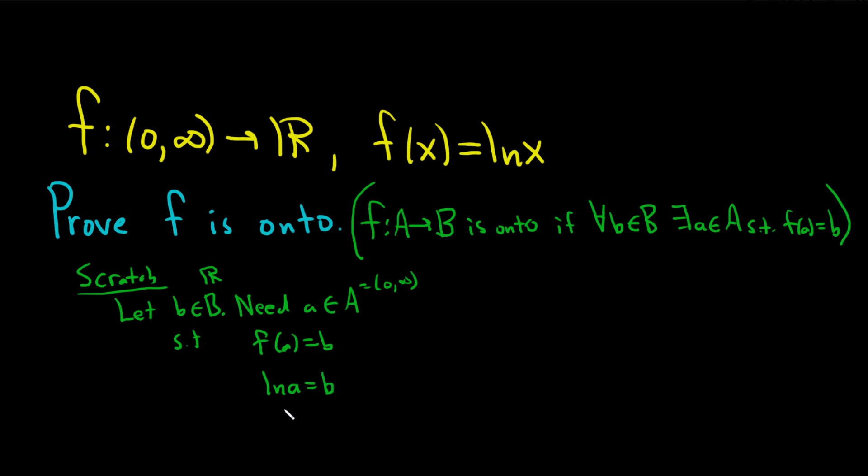Well how do we find the A? Well we have ln of A equal to b. We can exponentiate both sides like this. Boom! And so we get A equals e to the b.